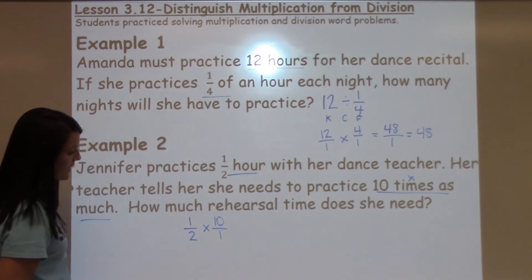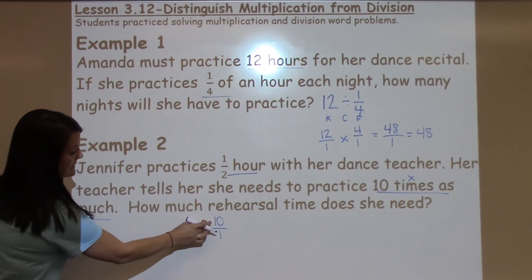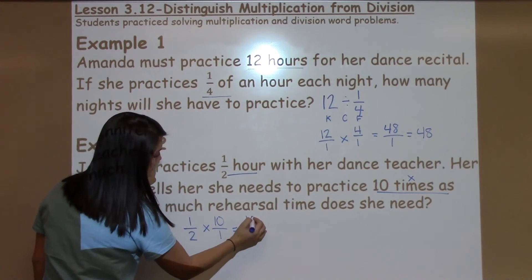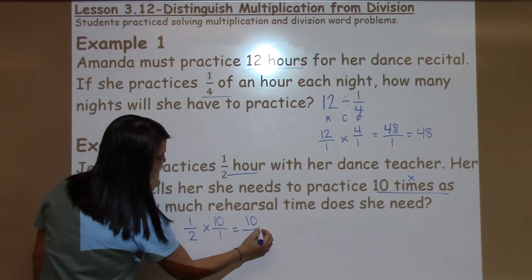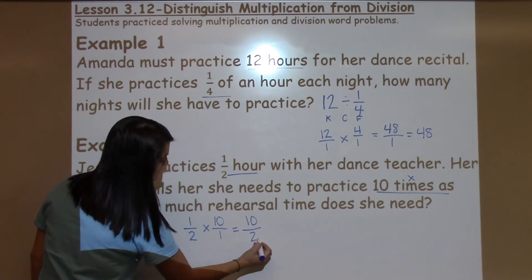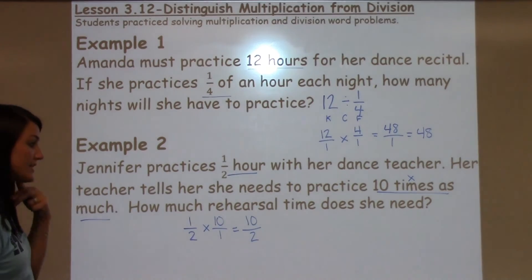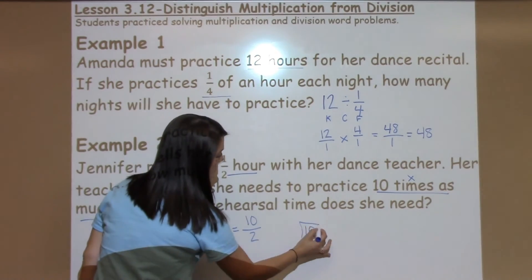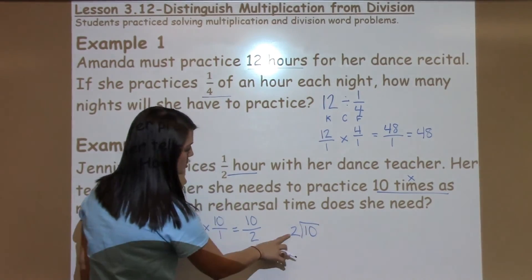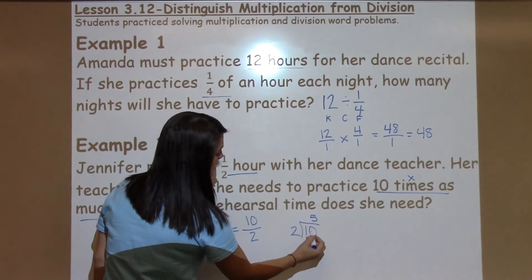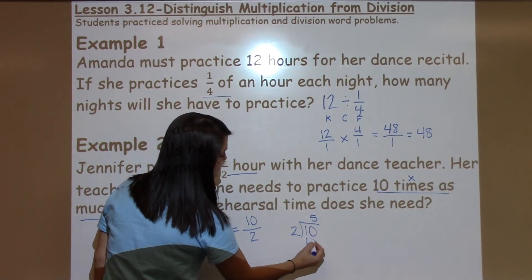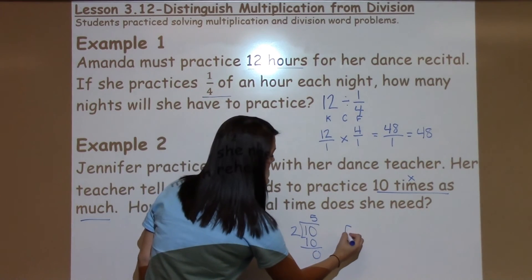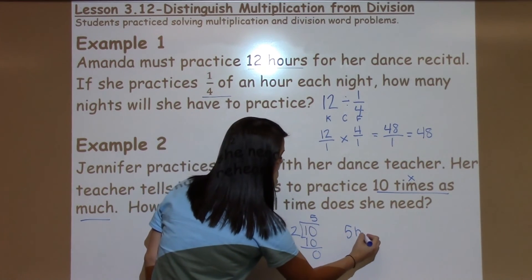I'm going to place 10 over 1 so it has a top and a bottom. 1 times 10 is 10, and 2 times 1 is 2. Now this is an improper fraction, so I'm going to take the top number and divide it by the bottom number. 2 goes into 10 five times, and my answer becomes 5 hours.